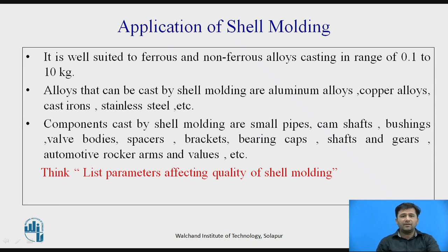Applications of shell moulding: It is well suited for ferrous and non-ferrous alloy castings in the range of 0.1 to 10 kg. Alloys that can be easily cast include aluminum alloys, copper alloys, cast iron, and stainless steels. Components cast by shell moulding include smaller pipes, camshafts, bushings, wall bodies, spacers, brackets, bearing caps, shafts and gears, and automotive rocker arms.